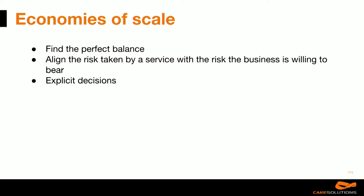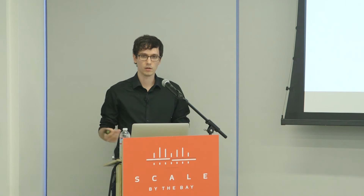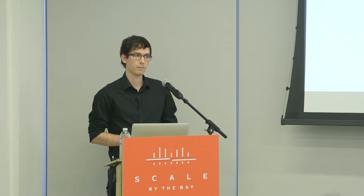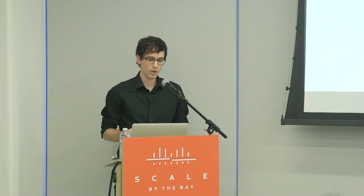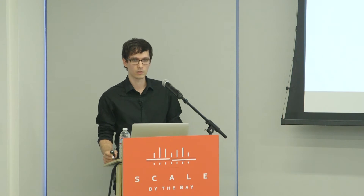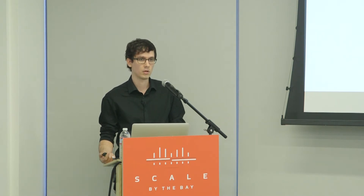It often becomes about finding the balance. We don't want to build a perfect system — what we're aiming for is aligning the risk taken by a service with the risk the business is willing to bear. Sometimes there's a known issue that can happen very rarely but may not make sense to fix, because the impact is just not worth the effort. But importantly, it has to be an explicit decision. You can't just have a system full of holes and say 'whatever, that was expected.' You should still build all the good things — reliability, delivery guarantees, consistency — but sometimes you may choose not to implement certain things.